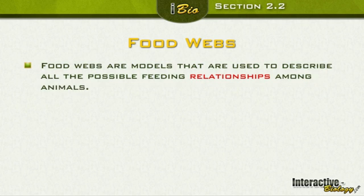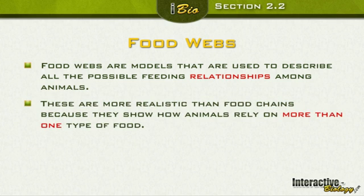Food webs are models that are used to describe all the possible feeding relationships among animals. It's not just a simple one-chain type thing — there are many different relationships. Food webs are more realistic than food chains because they show how animals rely on more than one type of food.